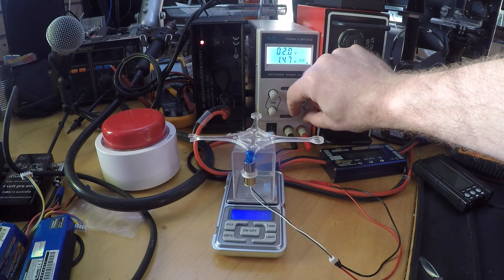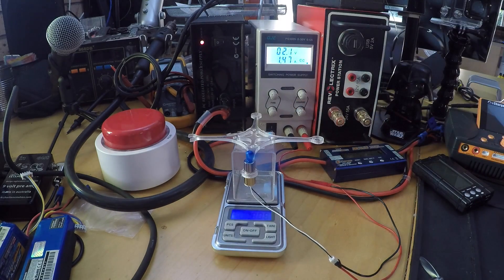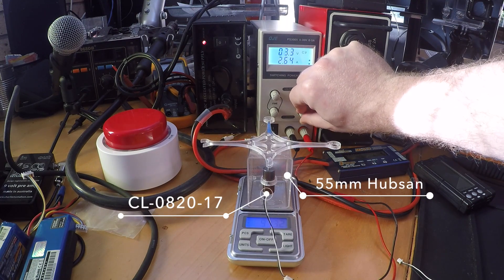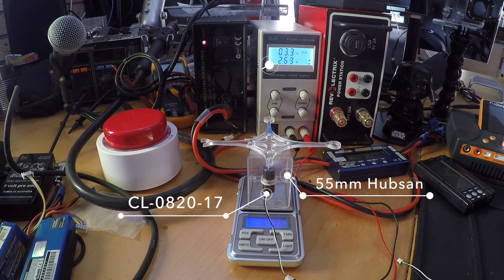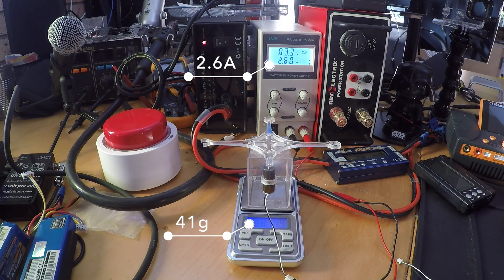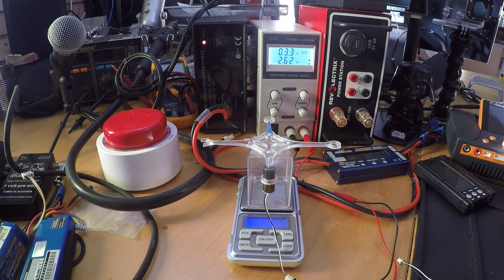More punch, less flight time. 17,000 kV motors with the 55 millimeter props perform almost identical to the slower motors with the larger propellers.